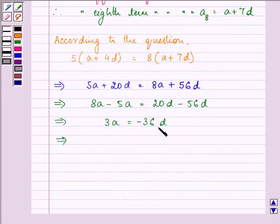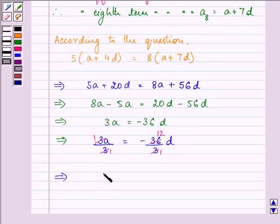On dividing both sides by 3, we have 3A divided by 3 is equal to minus 36D divided by 3. Further, we have A equal to minus 12D,